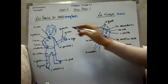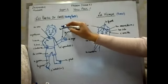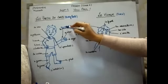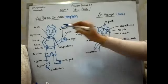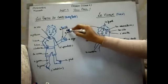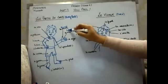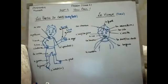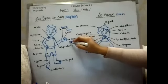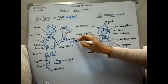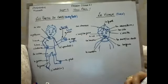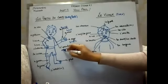Now let us see the meanings. Le pouce means thumb — please write it down in your books. Le main means hand. Then le doigt means finger. Next, l'épaule means shoulder.